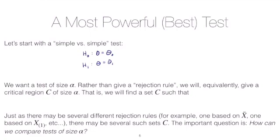So what we'd like to do is have a test of size alpha. And rather than give a rejection rule, we can give a critical region C of size alpha. And what we're doing when we try to find a test of size alpha is that we want the probability that the data, so this is a vector of X1 through Xn, that's our sample data,